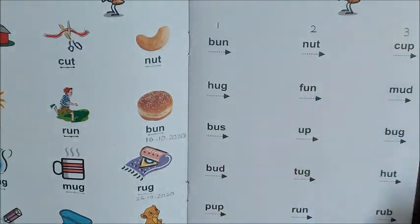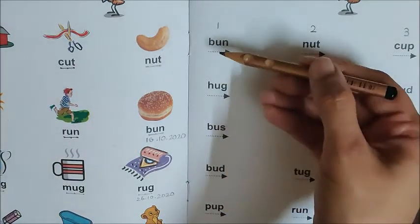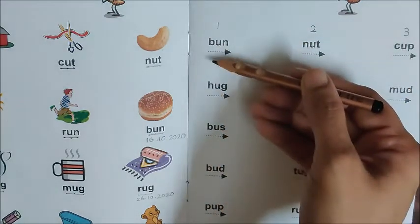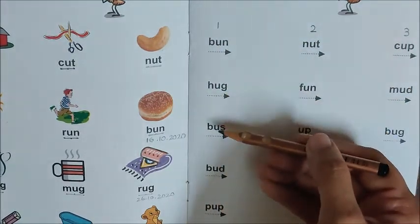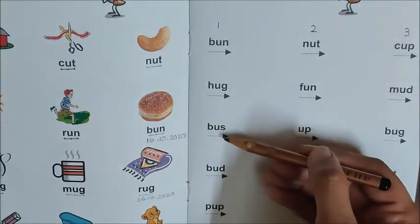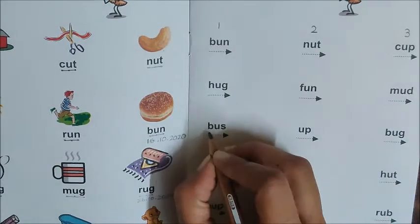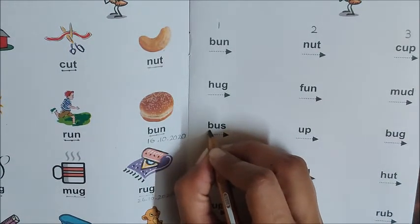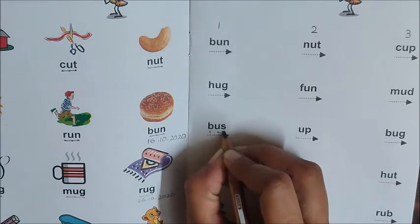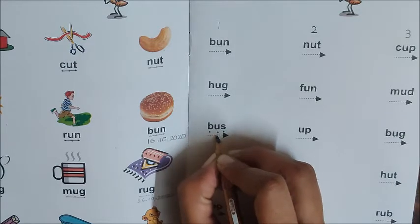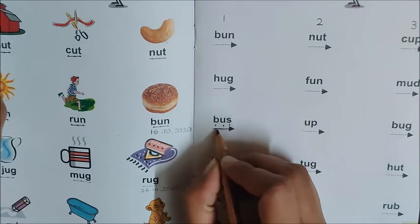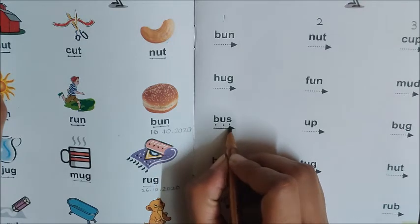Children, the first word is bus. Look for the word bus. Where is it in column 1? Is this bus? No. Is this bus? No. Is this bus? Yes. So children, let us mark the sounds: B, A, S. Join and read — B, A, S — bus.